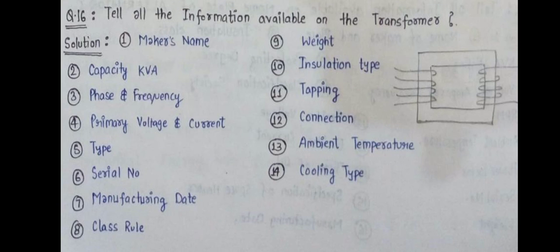These are the things available on the nameplate of a transformer. We can say maker's name, manufacturer number, serial name, type, classification society, then capacity in kVA, phase and frequency, primary voltage and current, total weight, installation type, tapping, connection, ambient temperature, and cooling type. These are all the information that can be seen on the nameplate of a transformer.